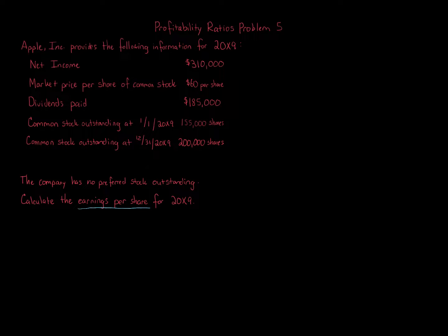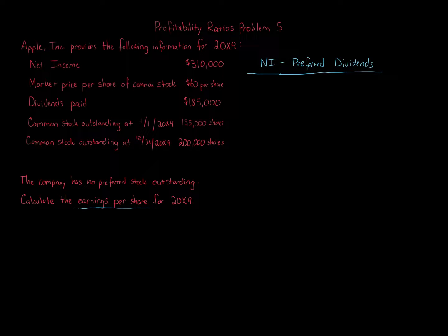Earnings per share, though, is the one that many people know even before thinking about ratio calculations — it's the one they tend to go to above others, which shouldn't be undervalued. Let's go ahead and calculate this. The formula for earnings per share is net income minus preferred dividends, divided by the number of common shares outstanding. Note that you can calculate EPS for preferred stock, but if not told otherwise, you're doing it for common stock.